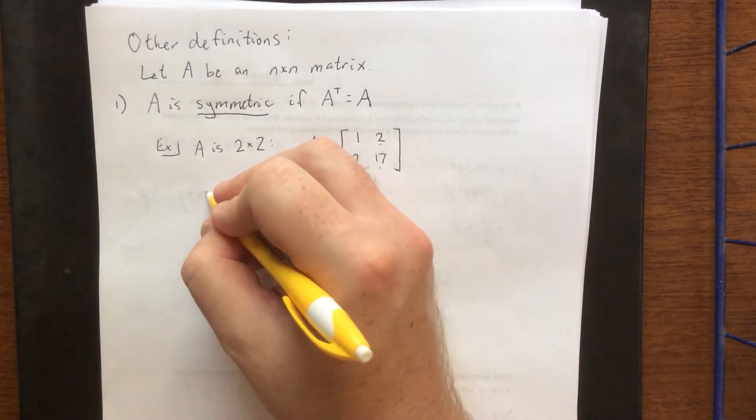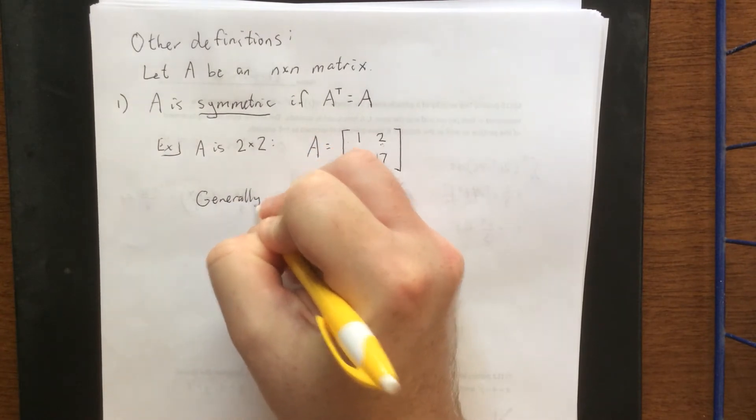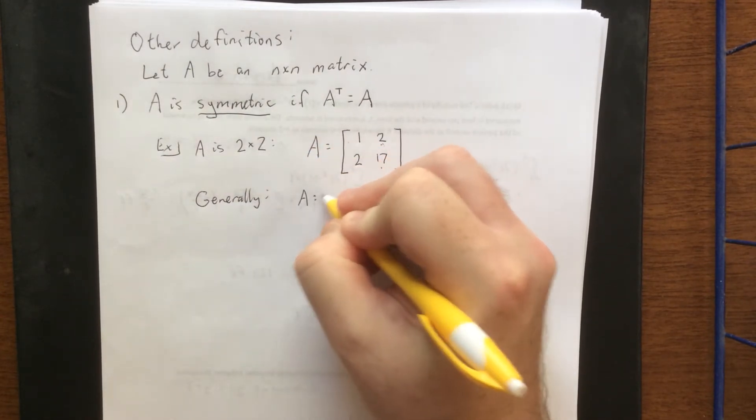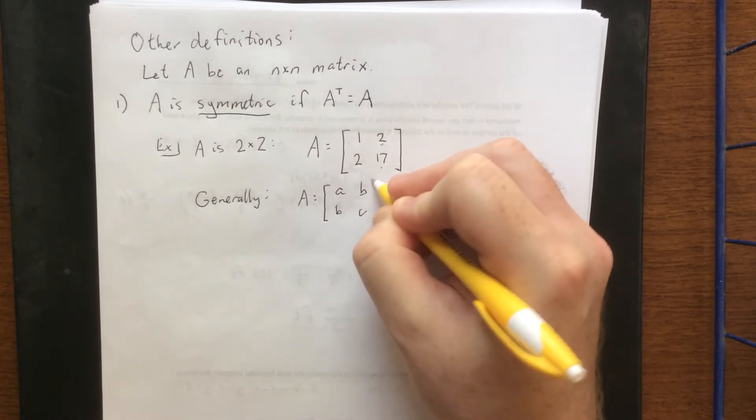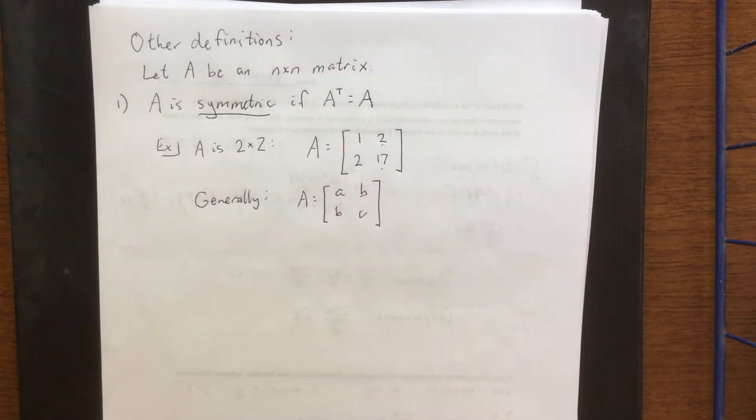More generally, if A is a 2 by 2 matrix, it's going to take on the following form: A, B, B, C, where A, B, and C are distinct digits.